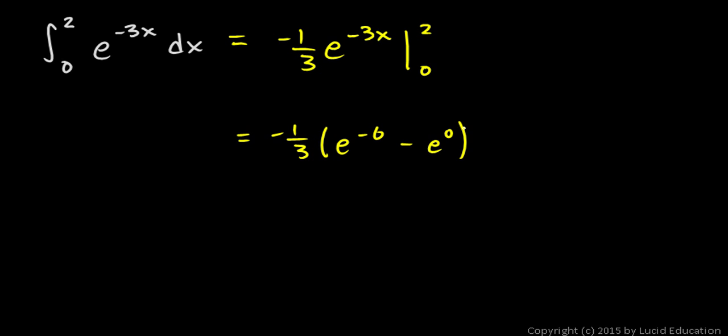And e to the 0, of course, is just 1. So what I'm going to do now is flip those two around, switch places, which would be the negative of the expression in parentheses. And in the process, I get rid of that negative sign.